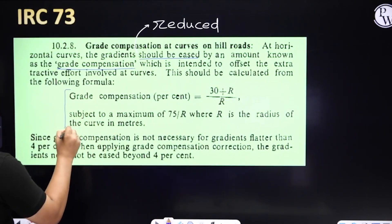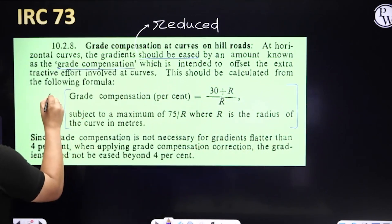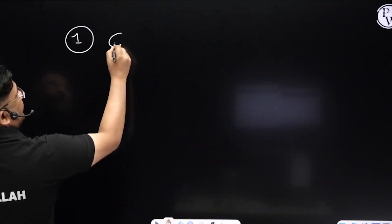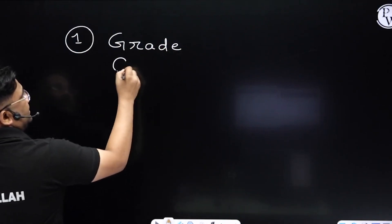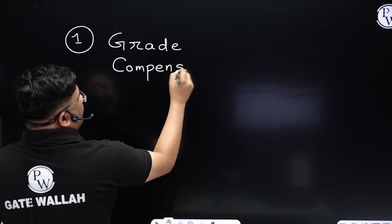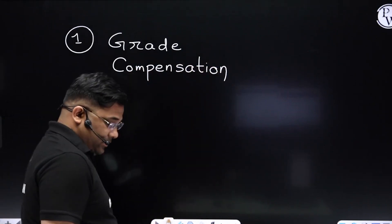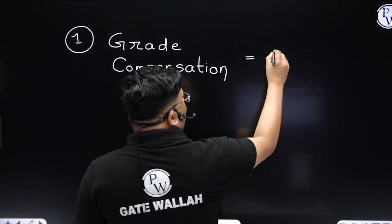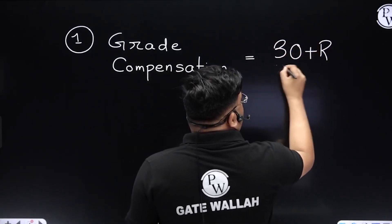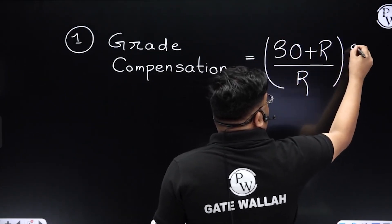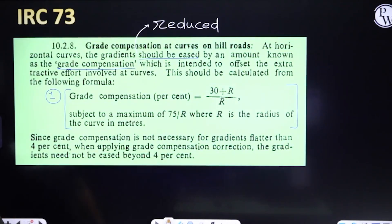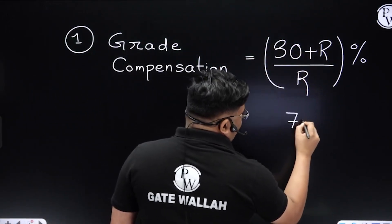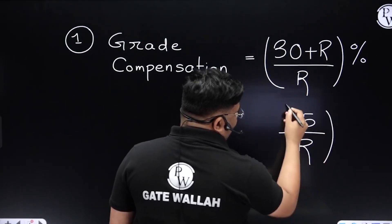This is point number 1. We have to reduce the gradient at horizontal curves by an amount — the formula is (30 + R) / R percentage. And this is subject to a maximum of 75 / R percentage. So we have two terms: (30 + R) / R and 75 / R.